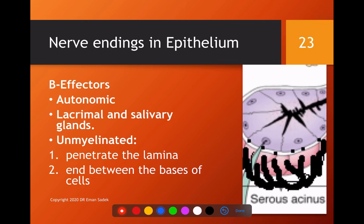We have now finished the receptors in the epithelium. There are four receptors: free nerve endings, Merkel disc, peritrichial plexus of nerves, and neuroepithelium. The last nerve ending in the epithelium belongs to the effectors.